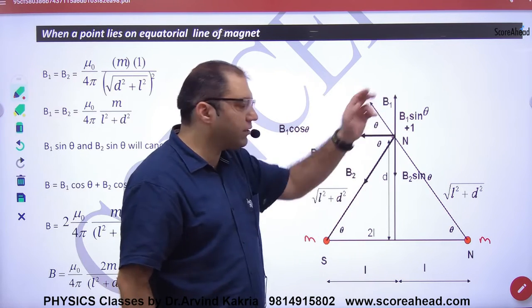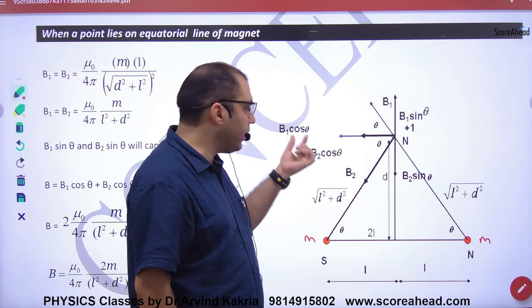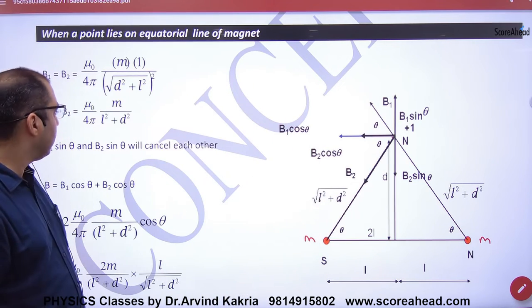What is the component in this direction? They cancel. Net B value will come in this direction. What will they do? Add. So we will add.